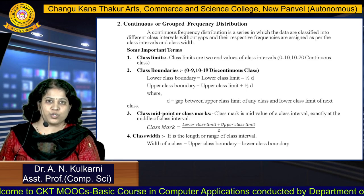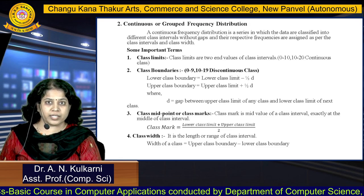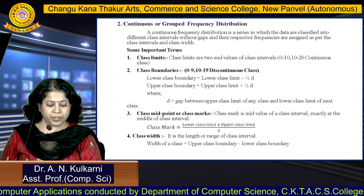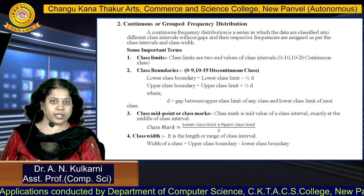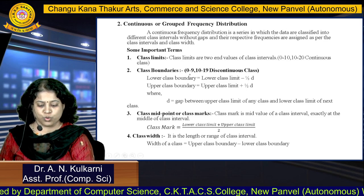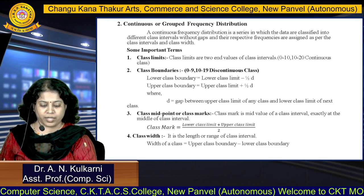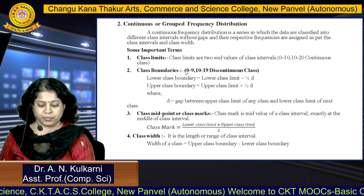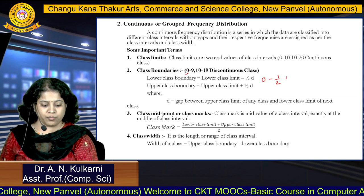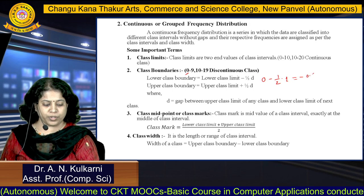Now, class boundaries. Whenever there is a discontinuous class, we have to calculate lower class boundary, upper class boundary, as well as D — the gap between the upper class limit of any class and the lower class limit of the next class. For lower class boundary of 0 to 9: lower class limit minus 1/2 × D. D is 1, so 1/2 × 1 = 0.5, giving minus 0.5.